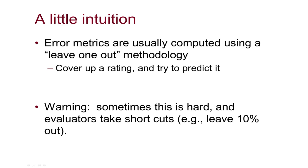Let's start with a little intuition. Error metrics tend to be thought of as a leave-one-out approach to understanding how a recommender would work. So I have this wonderful recommender system running — I may have hundreds of thousands of users, tens of thousands of items, millions of ratings. It's churning along, and I say, wait a minute, how good is this thing at predicting what these people are rating?